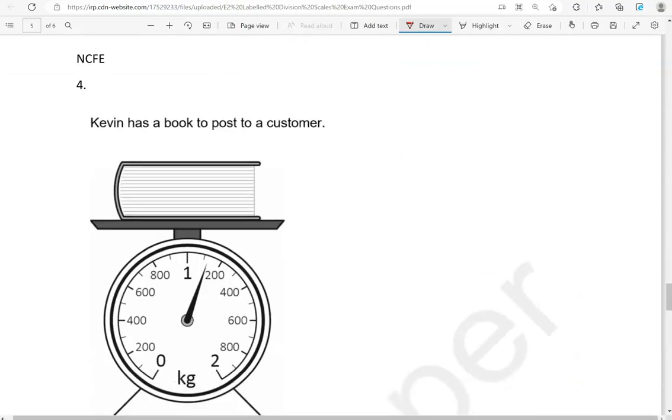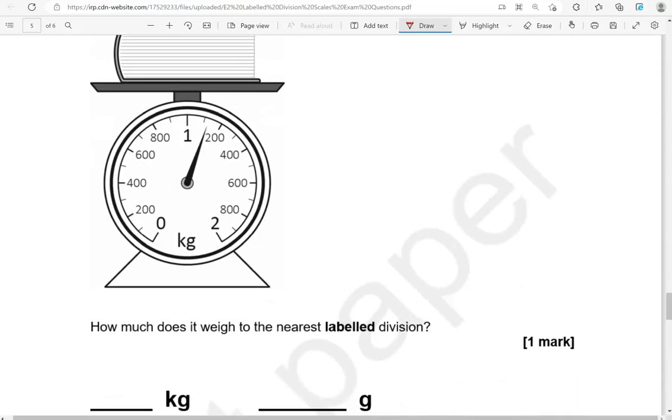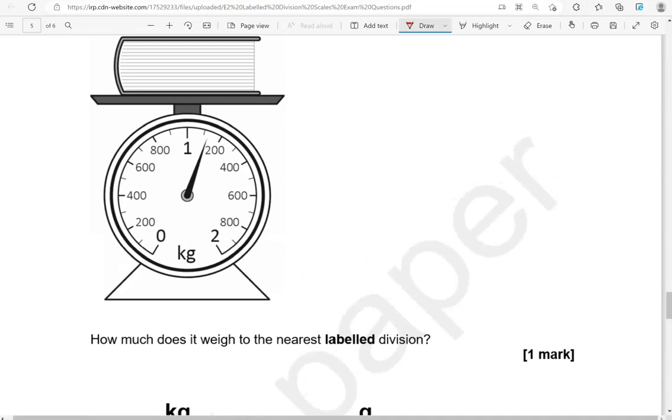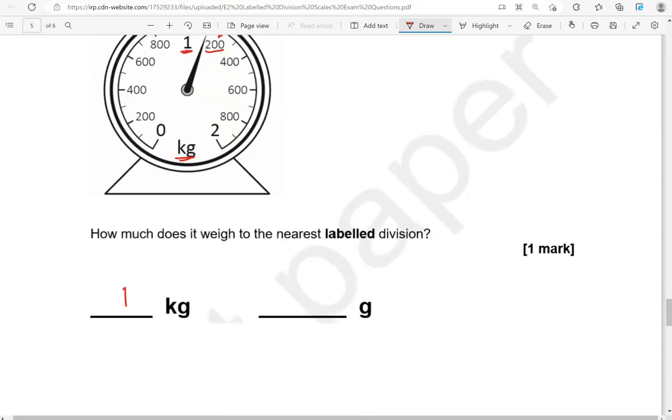Kevin has a book to post to a customer. How much does it weigh to the nearest labeled division? So that is in between 1 kilogram and 1 kilogram 200 grams. And as you can see, it's closer to this, which is 1 kilogram 200 grams.